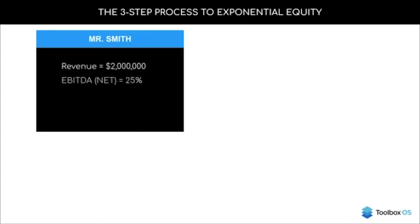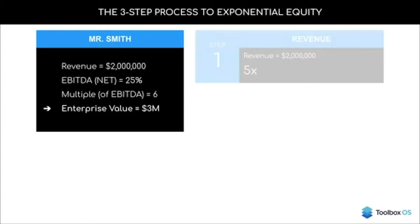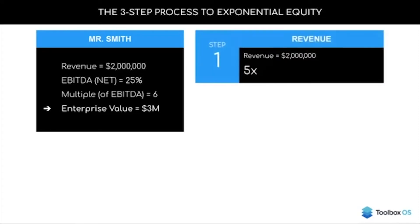So how does this work in practice? Let's say Mr. Smith has a $2 million business on 25% net, valued at six times net or EBITDA — that's an enterprise value of $3 million. First, we look at revenue. Mr. Smith says with the right technology he could 5x the size of this business from $2 million to $10 million.